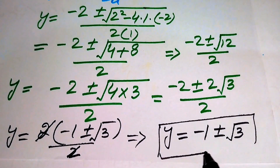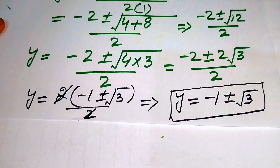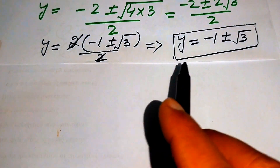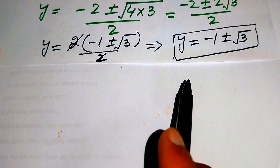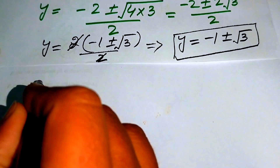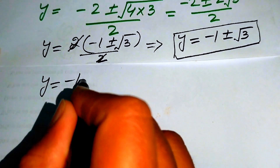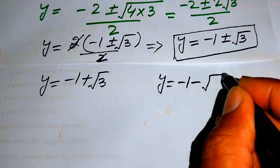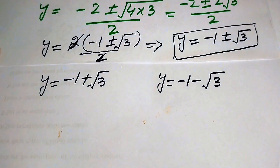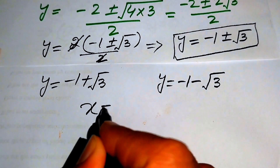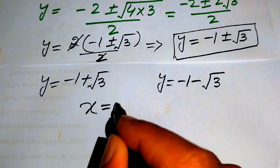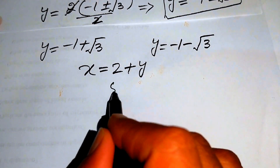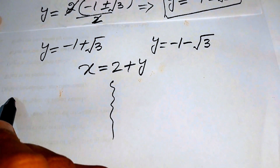So this is the value of y. Corresponding to this value of y we can get the values of x by substituting both values of y into equation number 3. The two values are y equals to minus 1 plus square root of 3, and y equals to minus 1 minus square root of 3. Equation number 3 is x equals to 2 plus y.